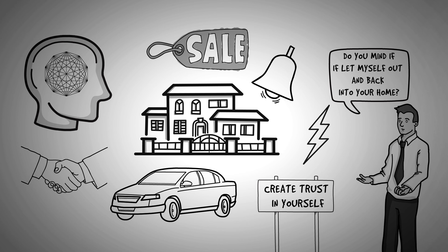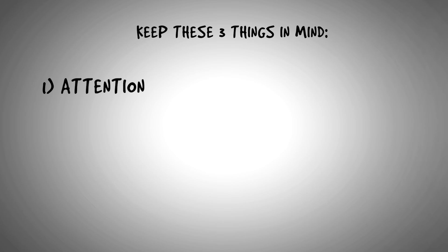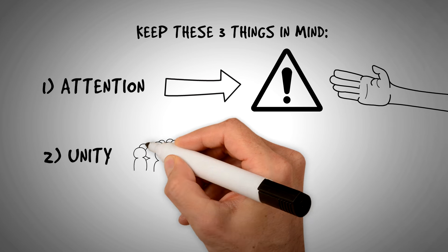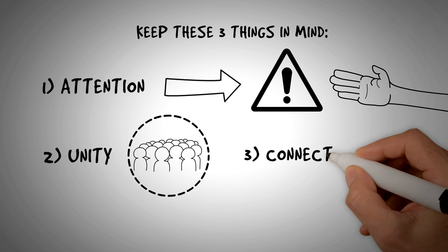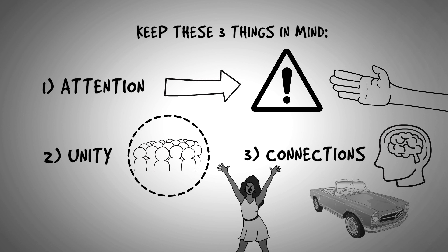Let's sum it all up. The next time you want to persuade someone, keep those three things in mind. One, attention. Where is it directed? Can you hold it? Two, unity. Are you part of the team? Are you part of them? Can you demonstrate that in some form or fashion? And three, connections. What positive mental connection and association are you making in your conversation? Now, let's see how you can make use of all these powerful tactics in your life.